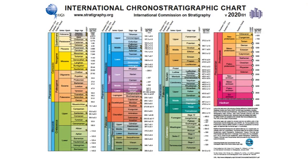If you look at these files, you'll notice one labeled IUGS — that's the International Union of Geological Sciences. They have a special committee called the International Commission on Stratigraphy, and what they put together is not really called a timescale in this situation; it's called a chronostratigraphic chart.